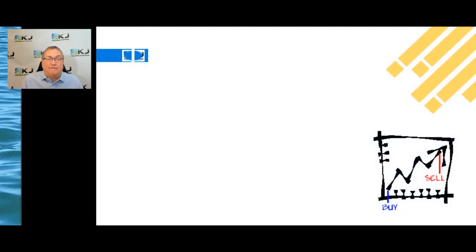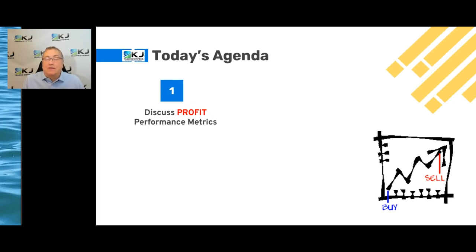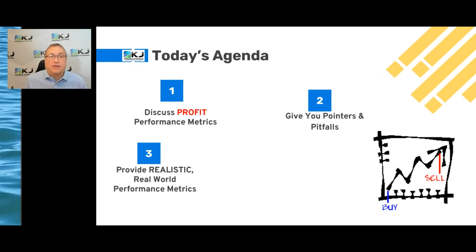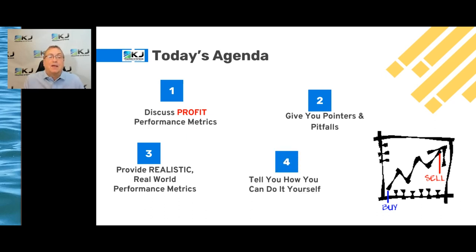Today I'm going to talk about four different things with performance metrics. First, I'm going to talk about profit-based performance metrics and show you some examples. Second, I'm going to give you some pointers and pitfalls — things to watch out for when you look at performance numbers. Third, I'm going to give you some of my strategy performance numbers — realistic, real-world numbers you can use as a benchmark. And finally, I'm going to tell you how you can build systems with good performance metrics.